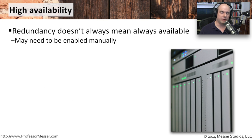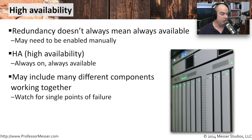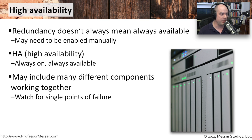Just because you have multiple servers or systems with redundancy doesn't necessarily mean your environment is highly available. High availability means systems will always be available regardless of what happens. With redundancy, you may have to flip a switch or power up a new system. High availability is always on, always available — if you lose one system, it doesn't matter, because you've got an extra system ready to take up the load. There may be many components working together: multiple WAN connections, multiple routers, firewalls, switches, and servers, all set up for high availability.